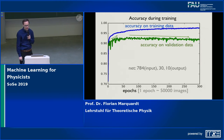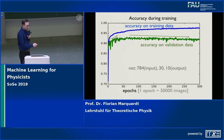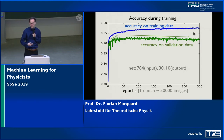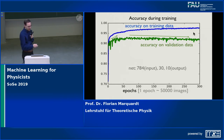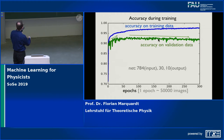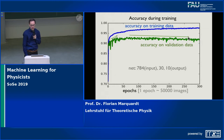If you adopt this approach and have a validation set on which you do not train, you see interesting behavior. The accuracy on the training data may increase over time as you train more on the training samples, but the accuracy on the validation data may level off at a much lower value and might even decrease again. So you are training more and more, but the accuracy on the validation data even decreases. That raises the question of what is going on.